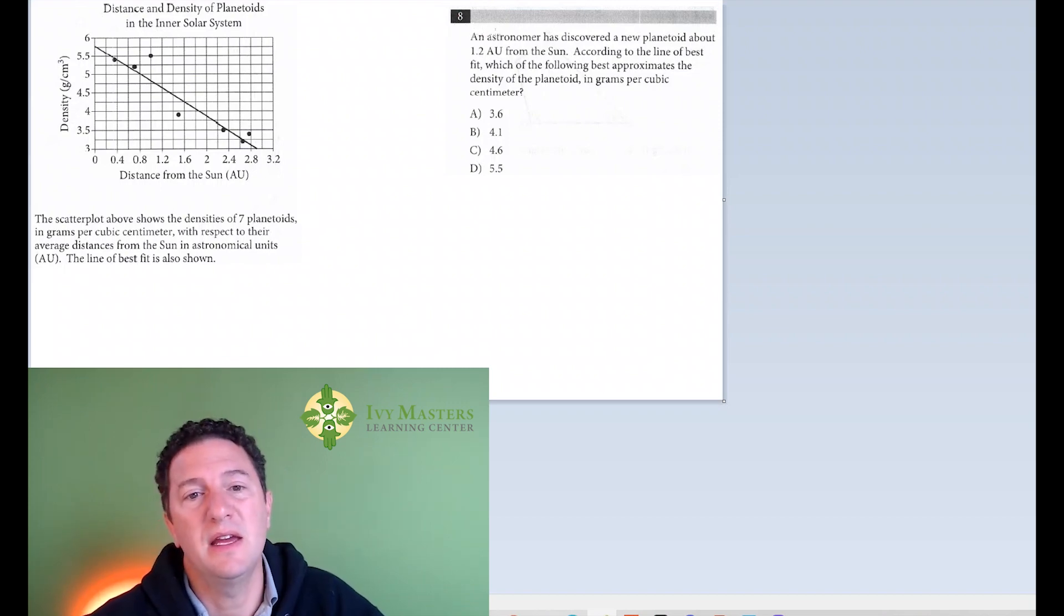Number eight. An astronomer has discovered a new planetoid about 1.2 AU from the Sun. At that point, I pause. I find 1.2 AU from the Sun.